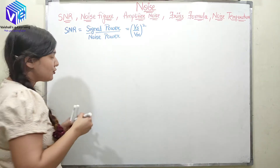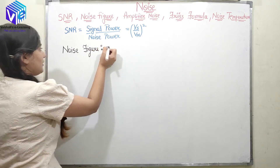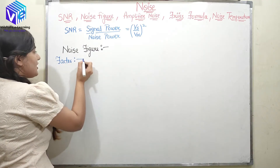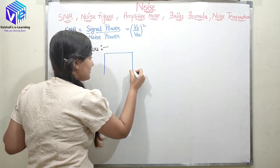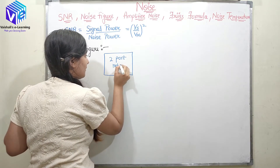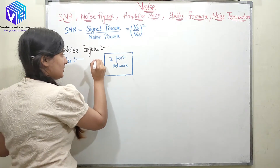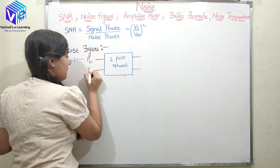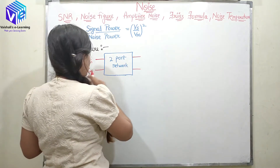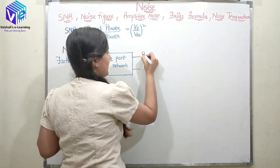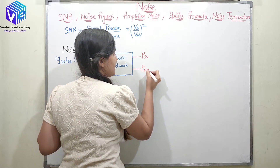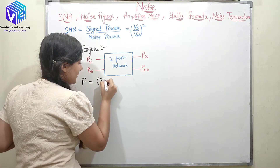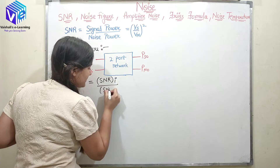Now coming to the next term: noise figure. To compute noise figure I must first know about noise factor. Noise factor can be computed with the help of a two-port network. In the two-port network, the inputs are PSI (signal power at input) and PNI (noise power at input), and the outputs are PSO (signal power at output) and PNO (noise power at output). The noise factor F = SNR_input / SNR_output.